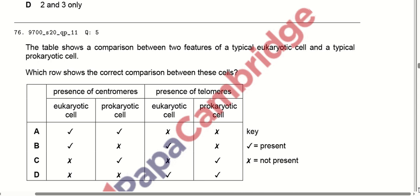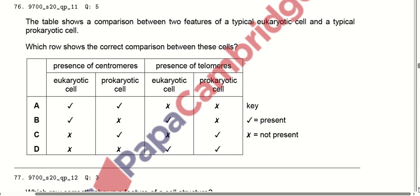The table shows a comparison between features of a typical eukaryotic cell and a typical prokaryotic cell. We need to find which option correctly compares the cells. Centromeres are present in eukaryotic cells but absent in prokaryotic cells. Option B is correct.